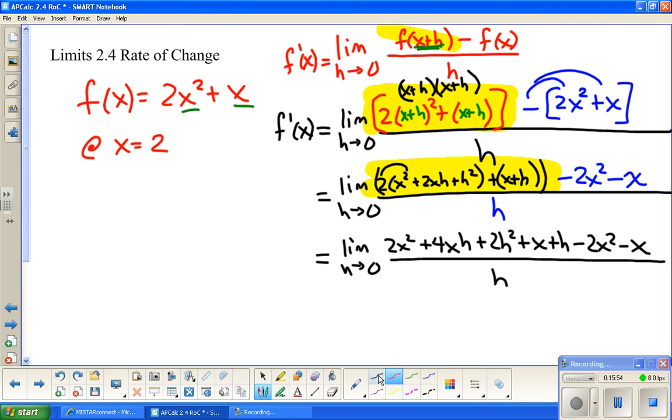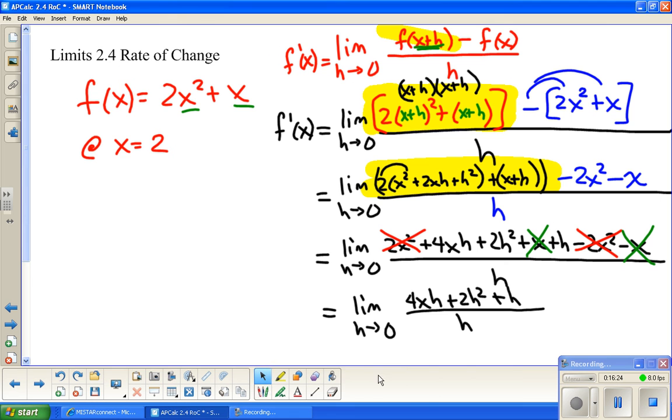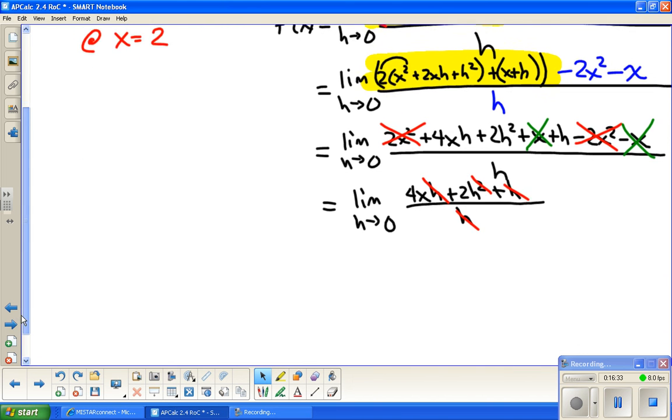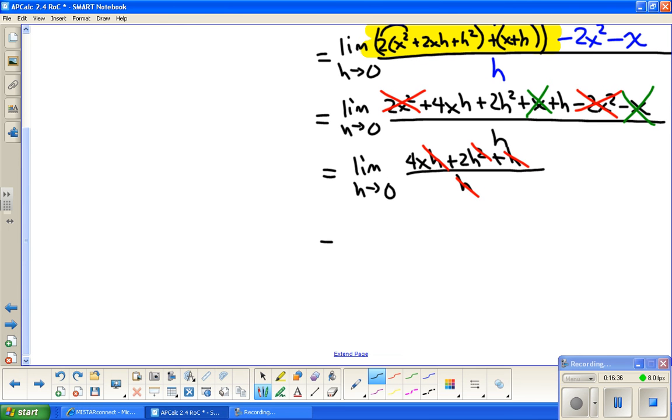If you find later that things aren't subtracting out, or as we like to say, canceling out, check your sign stuff. It's so easy to make a little sign error here. So, I have to distribute again. Doing some subtracting now. So, 2x squared minus 2x squared. x minus x. So, those are gone. Everything else has an h, and there are no other like terms.